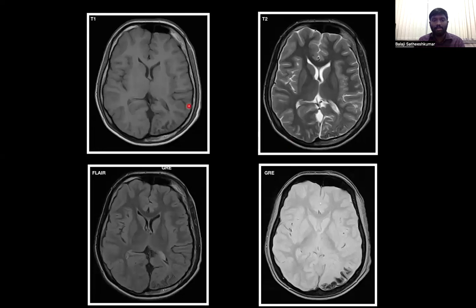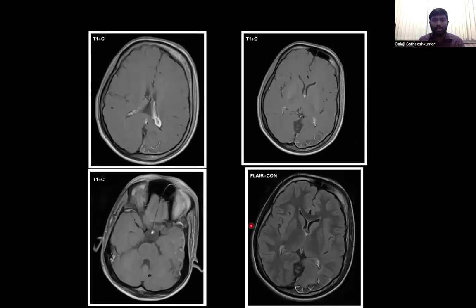In the next case, we see left-sided hemiatrophy along with T1 and T2 FLAIR hypointense signal along the left parieto-occipital lobes, which shows blooming on GRE suggestive of calcification. On post-contrast study, we see pial enhancement along the cortical sulci and gyri of the left parieto-occipital lobe with thickened and enhancing choroid plexus, suggestive of Sturge-Weber syndrome with calcification.